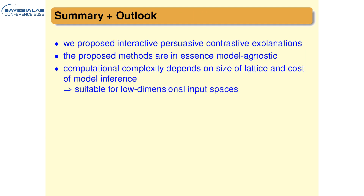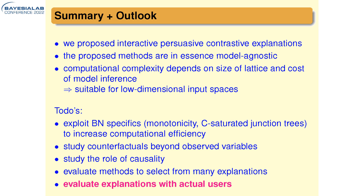In summary, we proposed an interactive persuasive contrastive explanation and a method for computing these explanations. The method is in essence model agnostic because we don't exploit Bayesian network-specific computations. However, it's computationally complex — depending on the size of the lattice and the cost of inference — making it suitable only for low-dimensional input spaces, not large neural networks or images. Future work should look at exploiting Bayesian network properties such as monotonicity and underlying inference structure to improve efficiency.